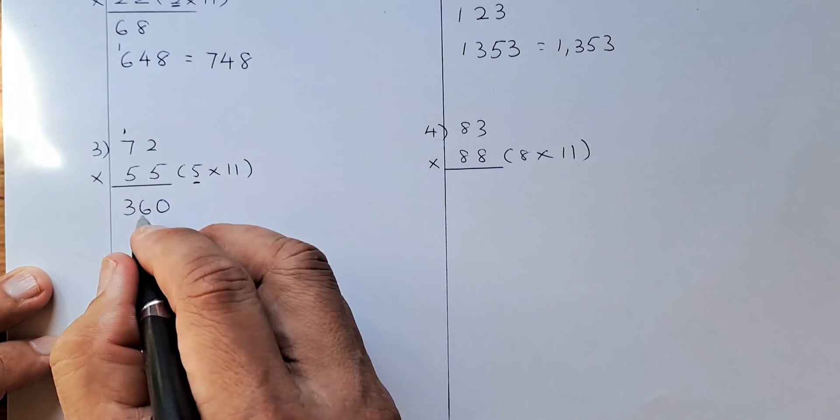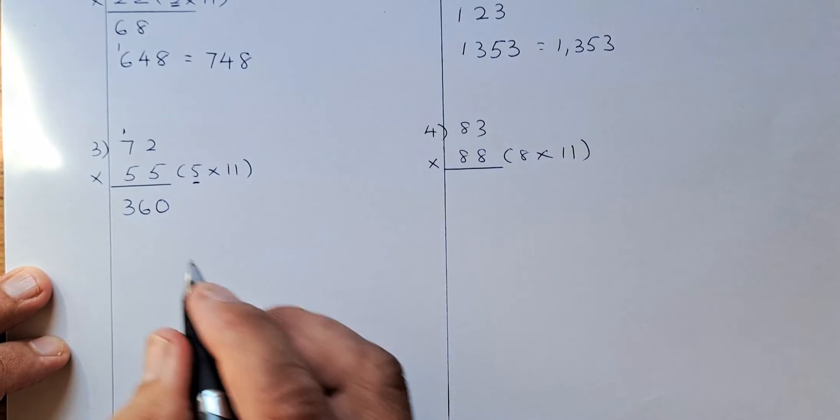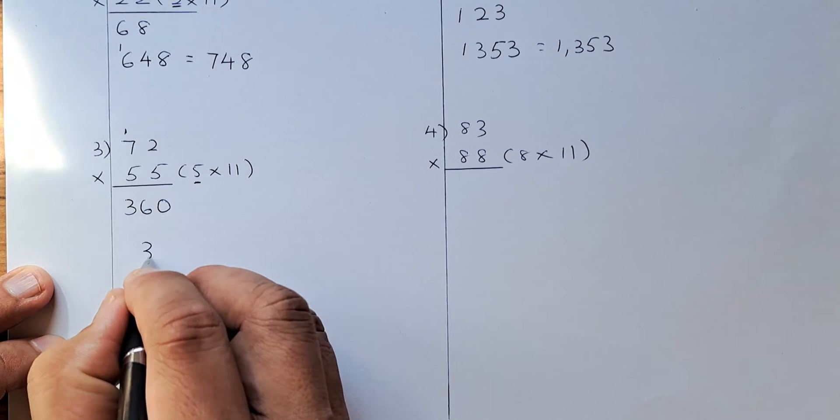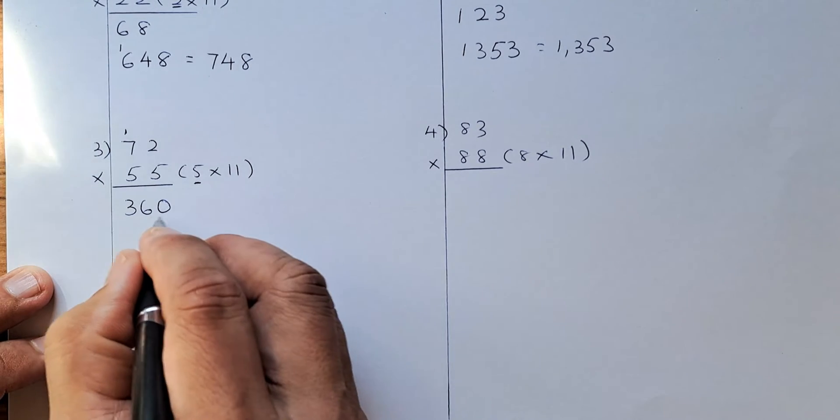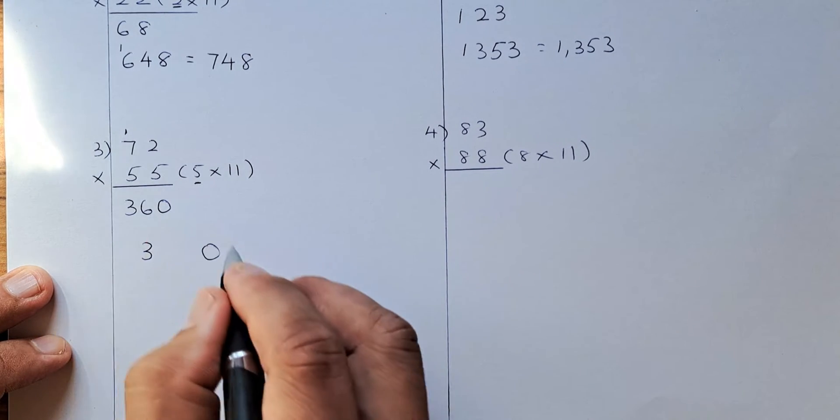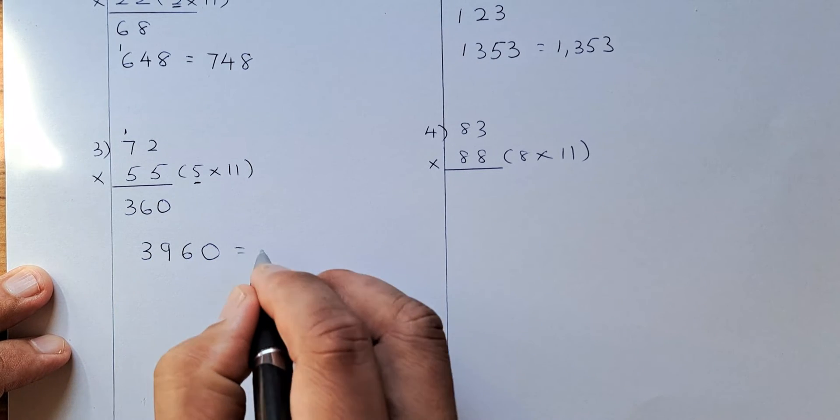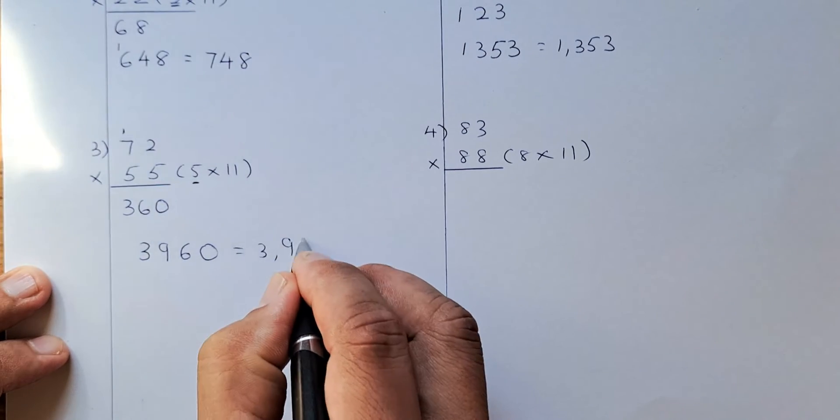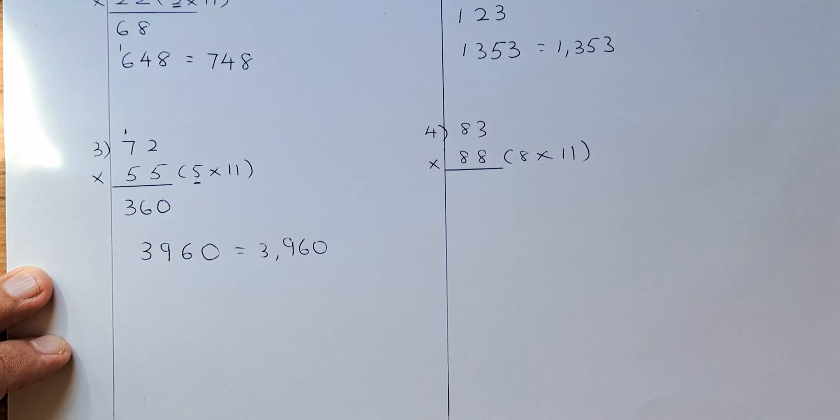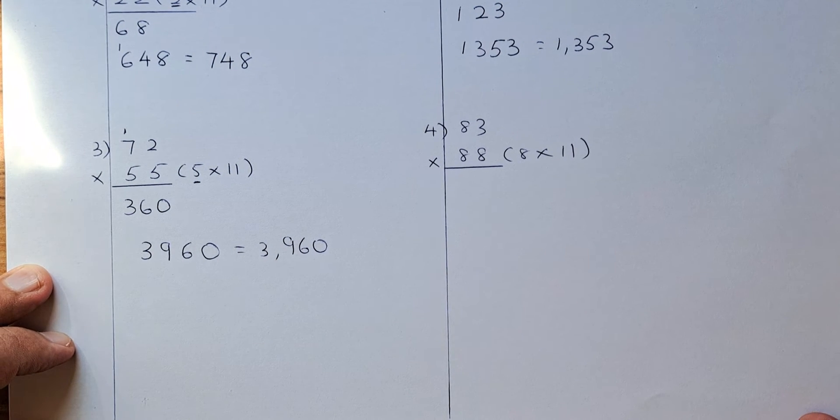Then we are going to multiply 360 by 11. So the steps remain the same. So 3 and 0 remain. And we are going to add the numbers in between. 6 plus 0 is 6. 3 plus 6 is going to be 9. So the answer is 3960 when you multiply 72 by 55.